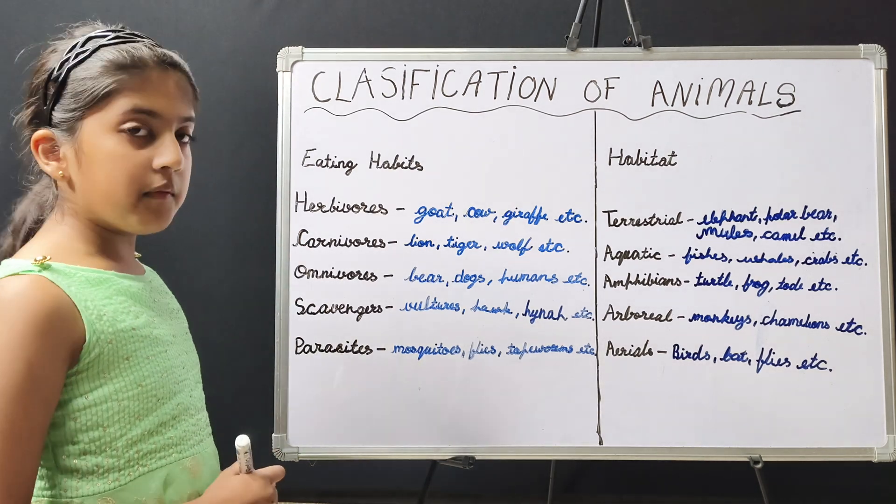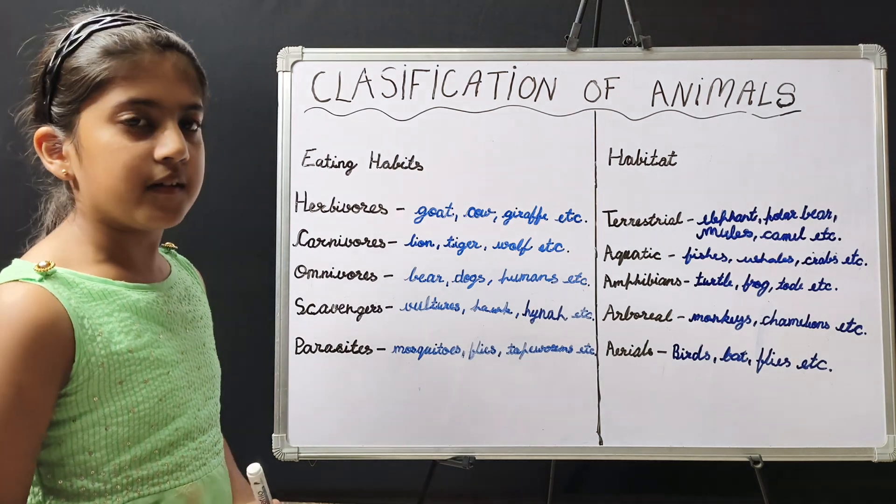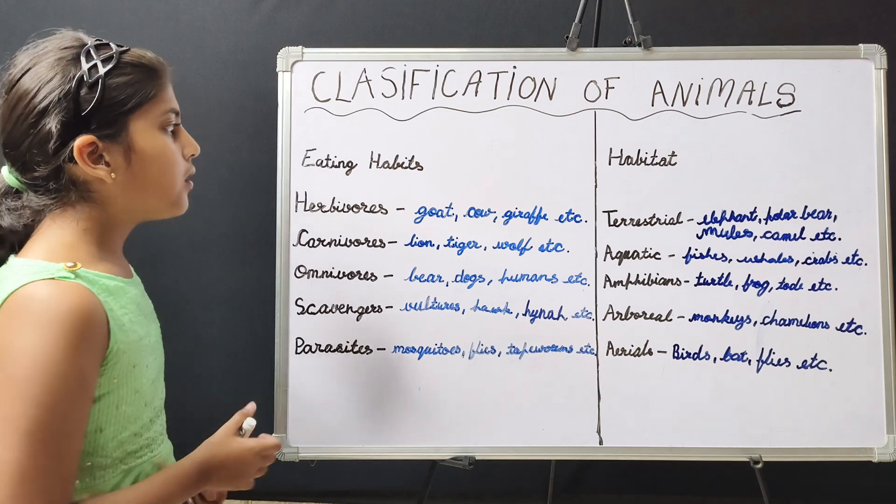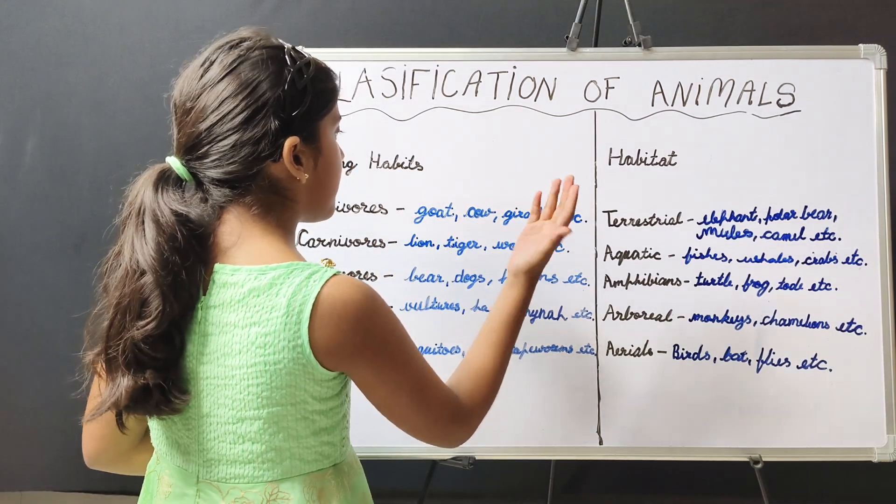Herbivores are those animals which eat plants. For example, goat, cow, giraffe, etc.